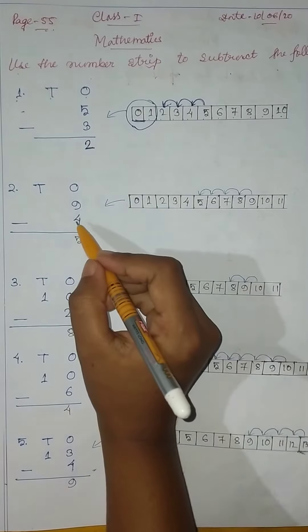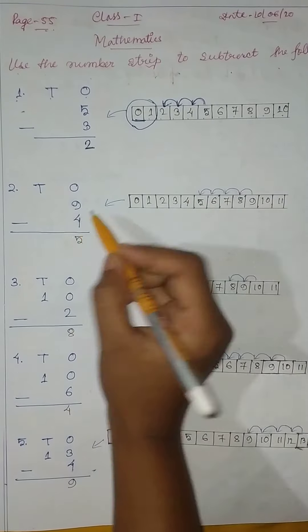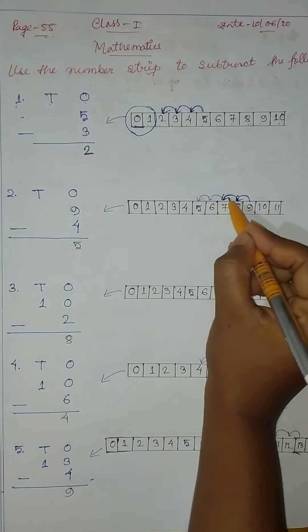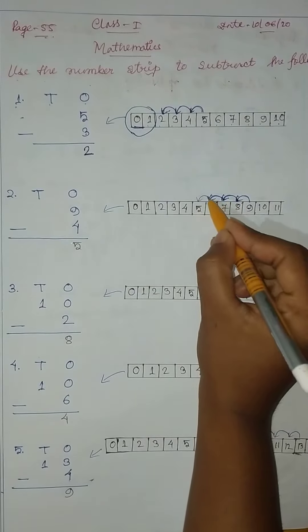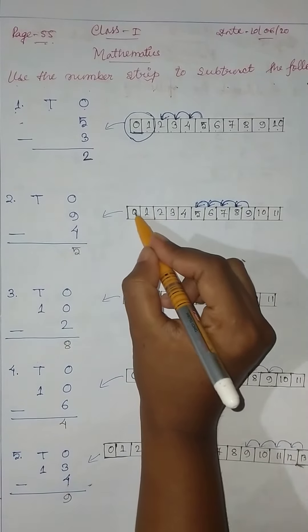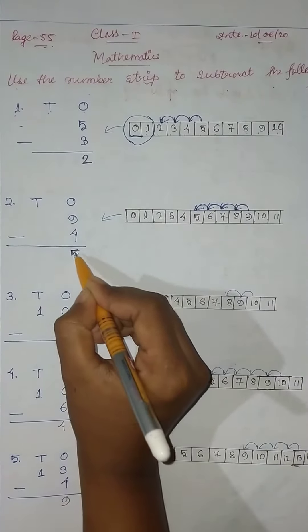Then, same. 9 minus 4. So here, 9. 1, 2, 3, 4. So here, 1, 2, 3, 4, 5. Here, 5.